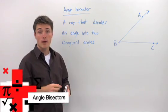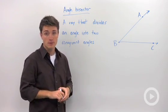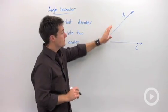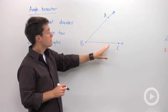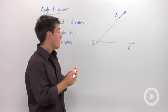An angle bisector is a ray that takes an angle and divides it into two congruent angles. So if we have this angle here, angle ABC, I could draw a ray that would perform an angle bisection.